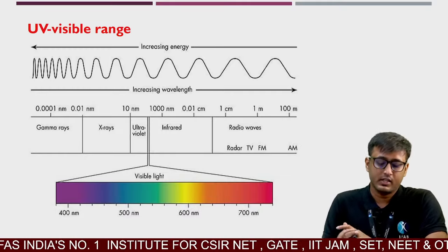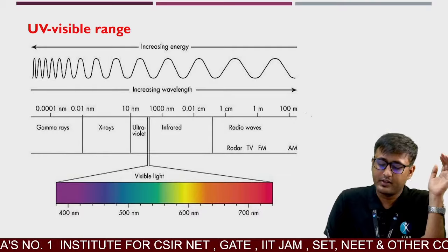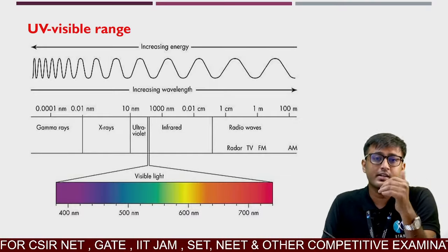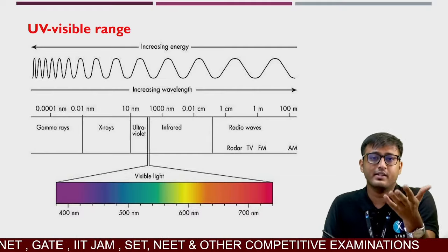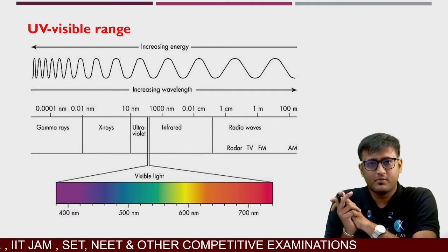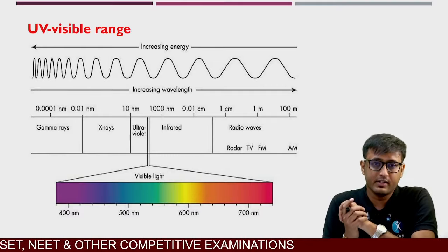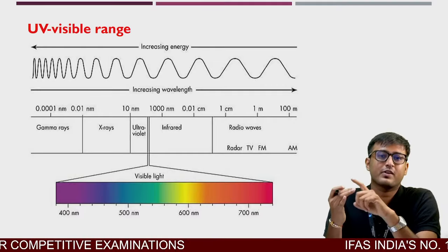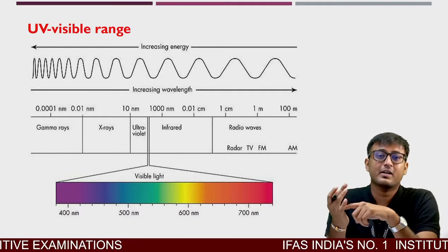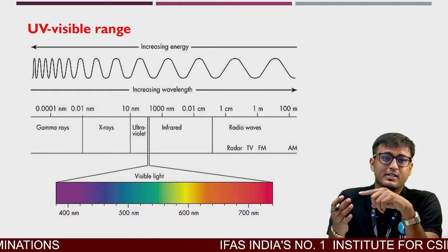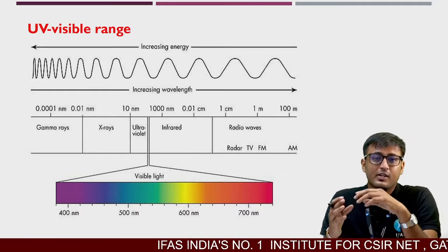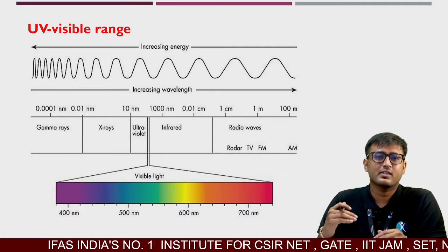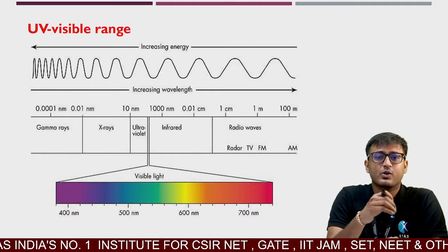This is a very big spectrum ranging from gamma rays to radio waves — gamma rays, X-rays, ultraviolet rays, visible rays, infrared rays, microwave, and finally radio waves. There are different types of spectroscopy depending on which electromagnetic radiation we interact with our molecules: infrared spectroscopy, CD spectroscopy, NMR spectroscopy, ESR spectroscopy, IR spectroscopy, UV visible spectroscopy, or even X-ray diffraction.